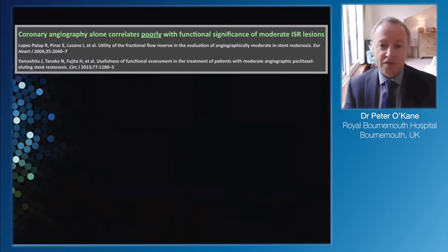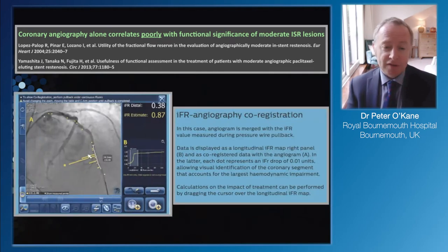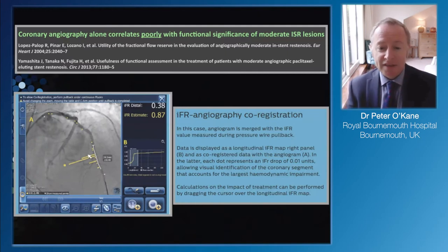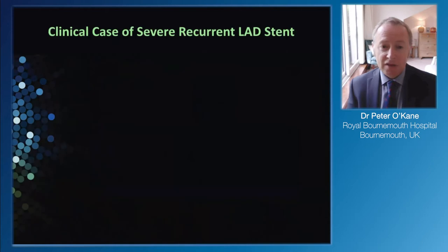Should we guide with angiographic or physiological assessment? We know the discordance for de novo disease is about 30% for angiographic versus physiologically significant lesions, and really the same applies for restenosis. So we should be thinking about using FFR and IFR in this situation. There's some clever technology now with IFR which allows us to use angiographic co-registration to really define where lesion severity is and what we should be treating.